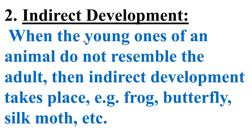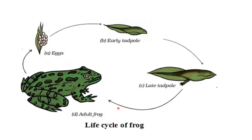Indirect development: when the young ones of an animal do not resemble the adult, indirect development takes place. Examples are frog, butterfly, and silk moth. The life cycle of a frog shows: eggs → early tadpole → late tadpole → adult frog.